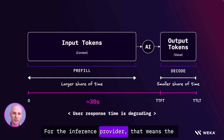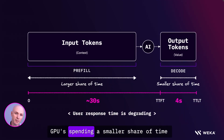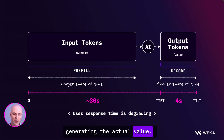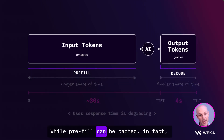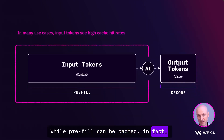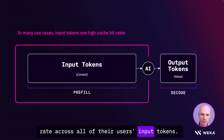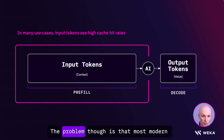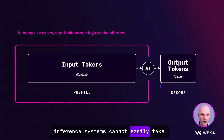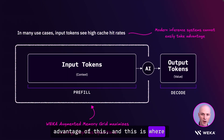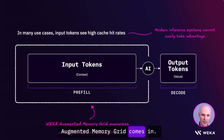For the inference provider, that means the GPUs are spending a smaller share of time generating the actual value. So what can we do about this? While pre-fill can be cached — in fact, DeepSeek publicly announced a 56% cache hit rate across all of their users' input tokens — the problem is that most modern inference systems cannot easily take advantage of this. And this is where Augmented Memory Grid comes in.